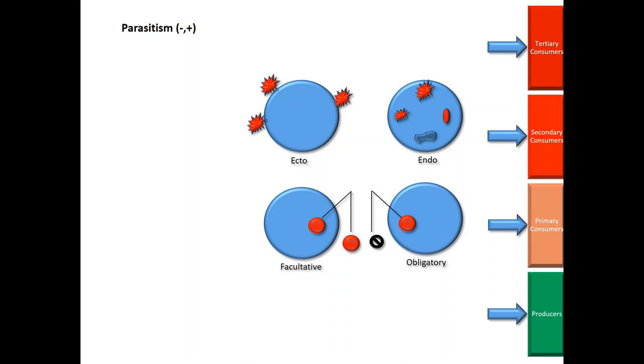There can be multiple hosts for a single parasite. To get entry into the host ecosystem, a parasite should have some adaptations.